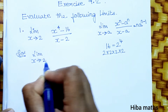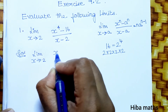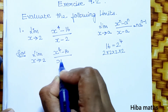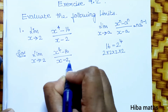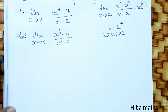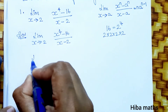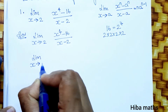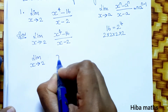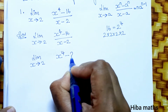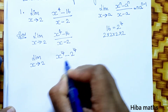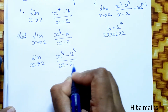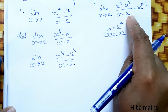So we write: limit x tends to 2, x power 4 minus 16 divided by x minus 2. In the next line, we rewrite this as: limit x tends to 2, x power 4 minus 2 power 4, divided by x minus 2.